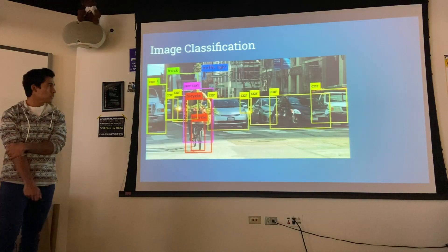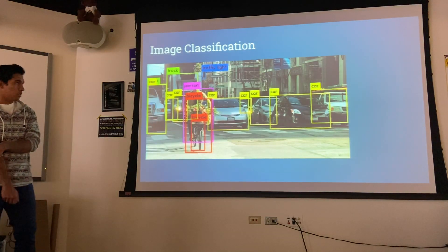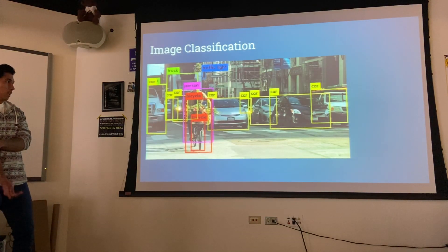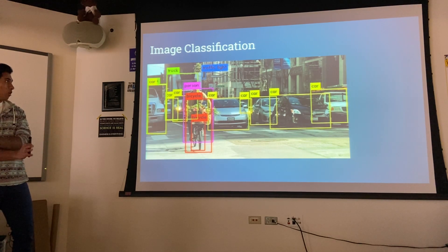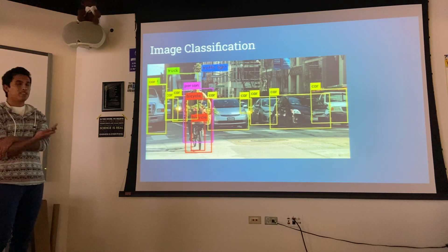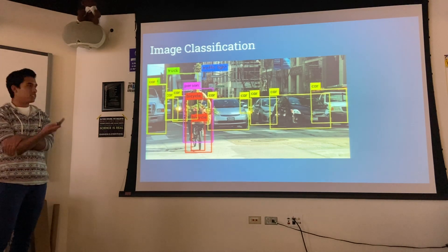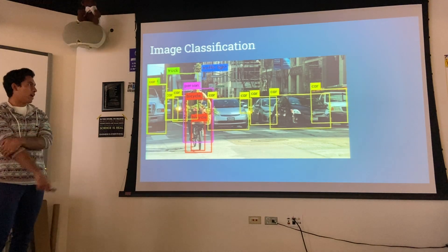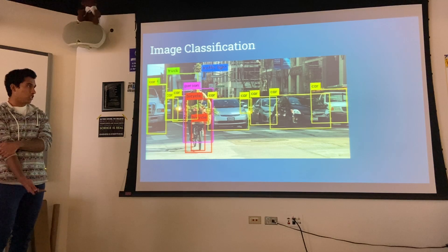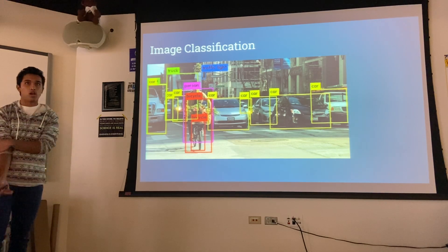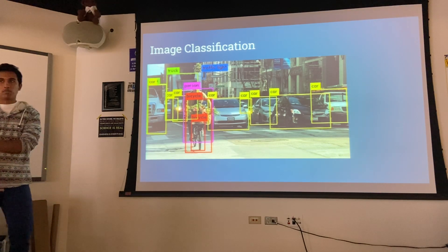This is image classification. Here we see a model that's doing pretty well at classifying cars, a person, a bicycle, and even a traffic light — which I couldn't see at first because it's so far in the back. So for image classification, we're doing very well.